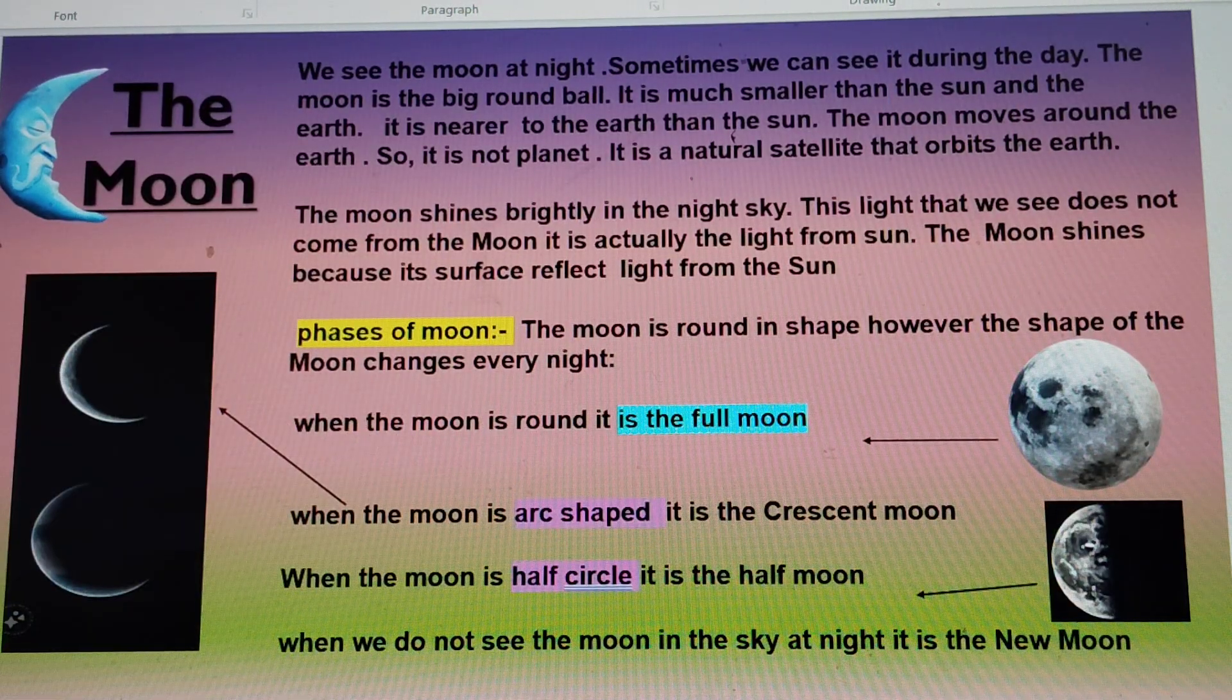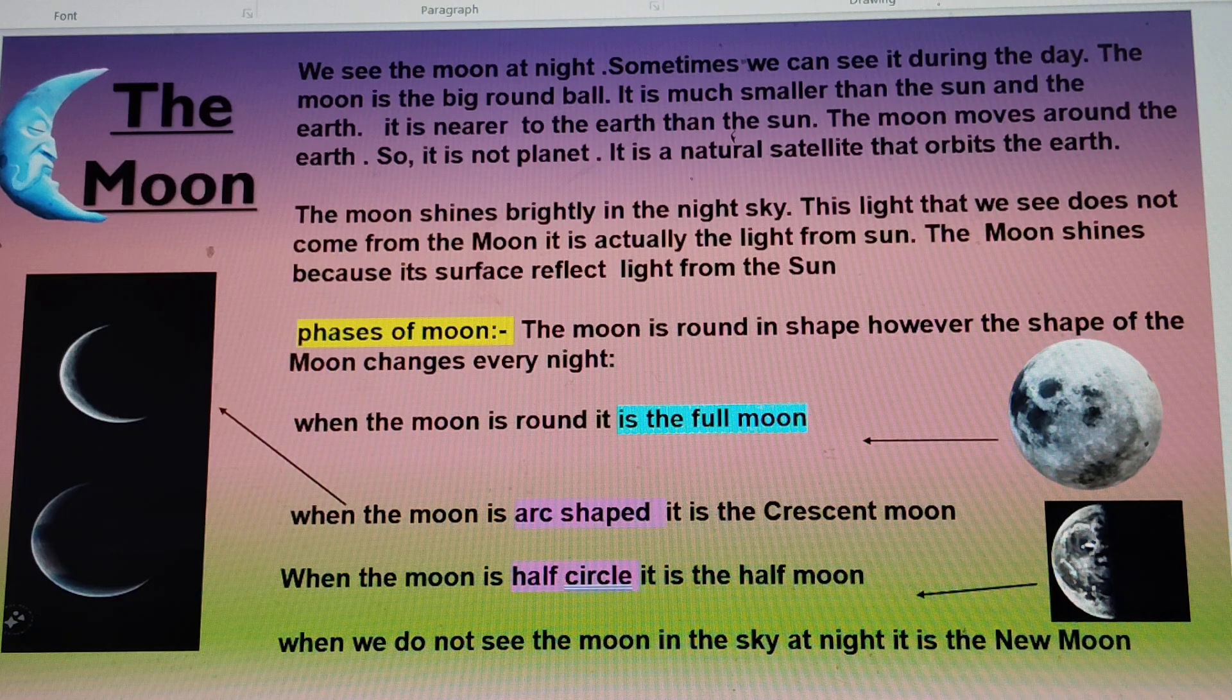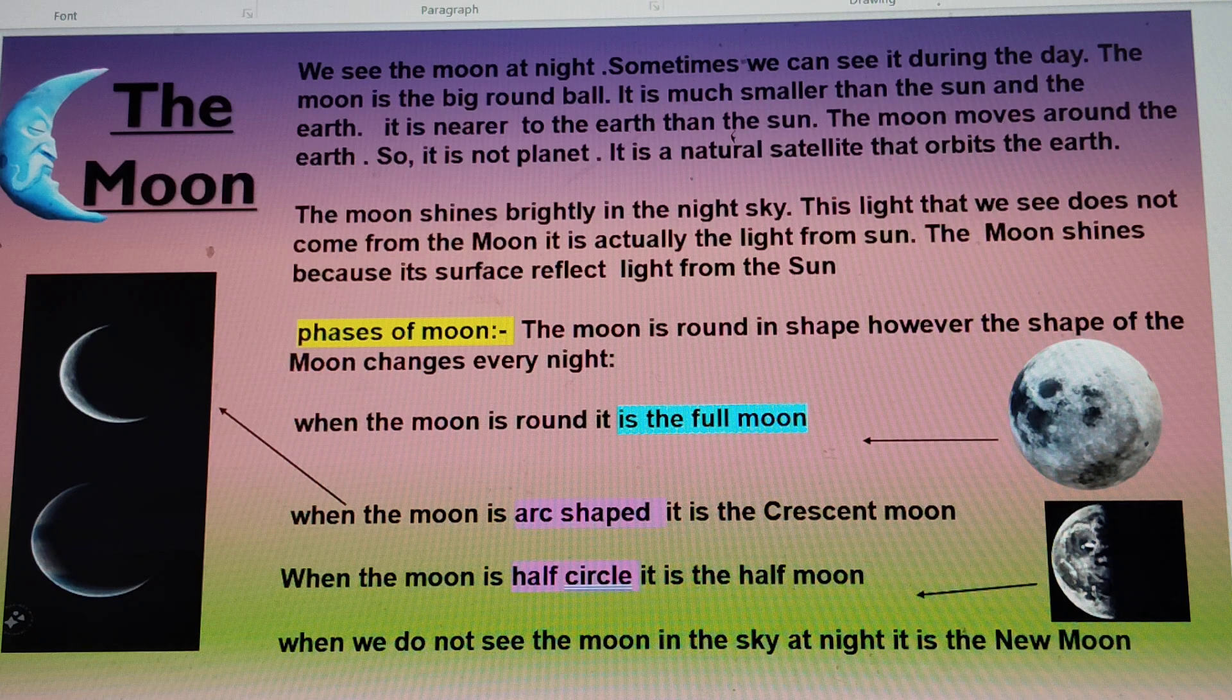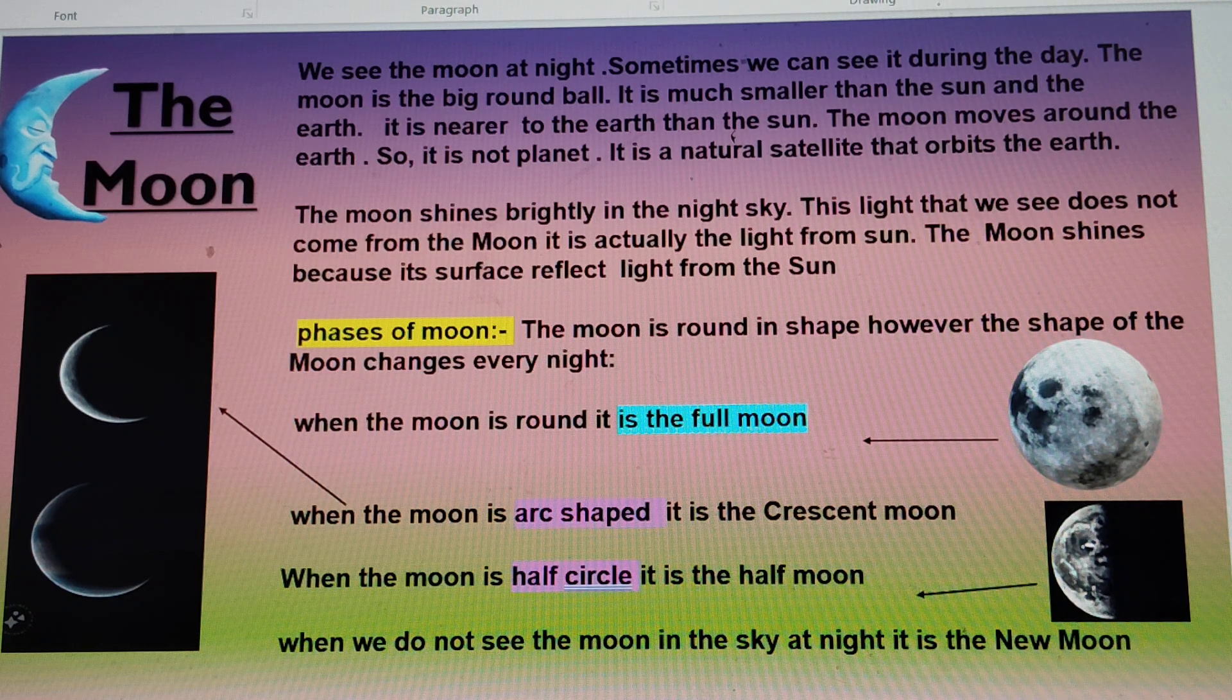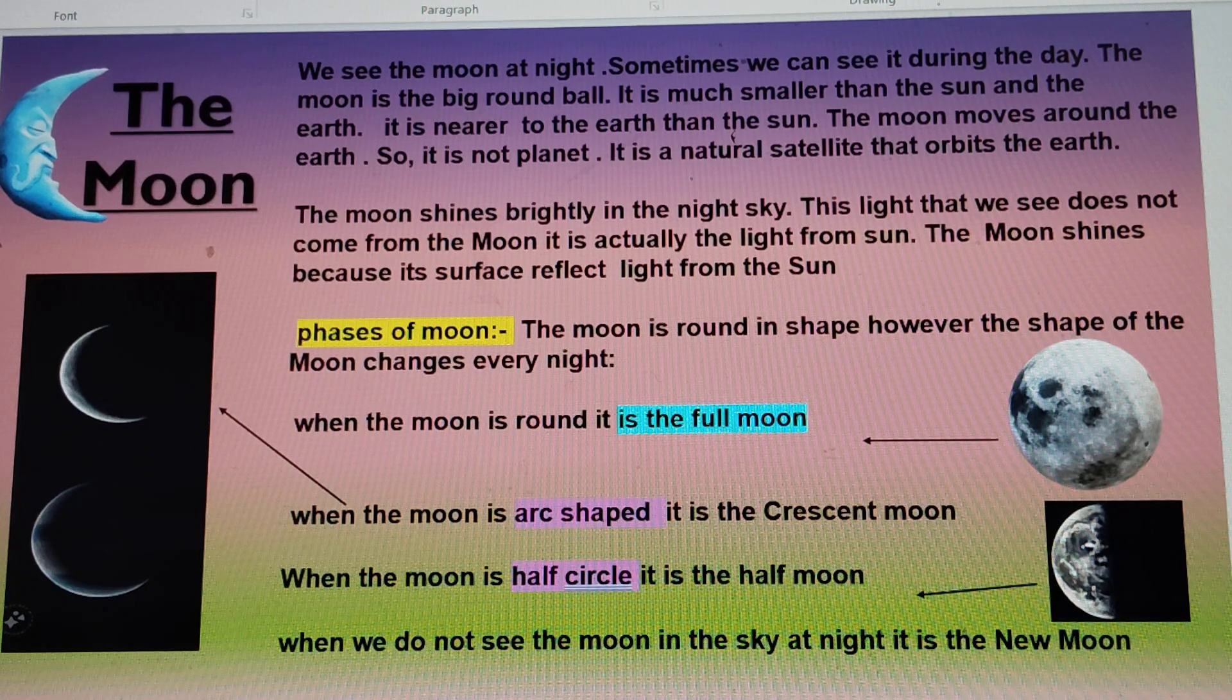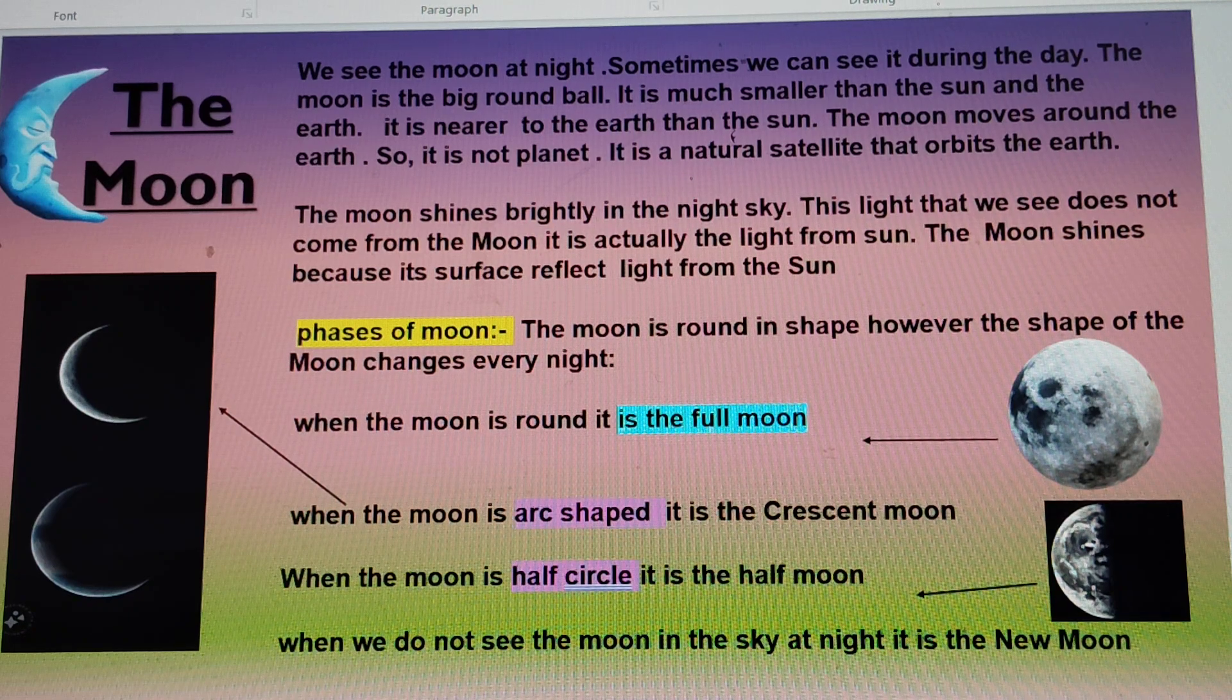Yes, we see the moon at night. Sometimes we see it in daytime also. The moon is a big round ball. It is much smaller than the sun and the earth. It is nearer to the earth than the sun. The moon moves around the earth. So, it is not a planet. It is a natural satellite that orbits the earth.